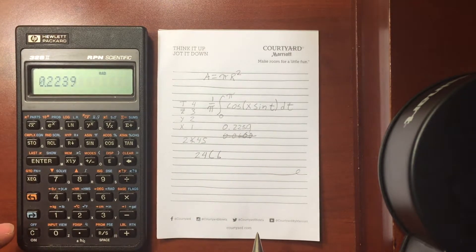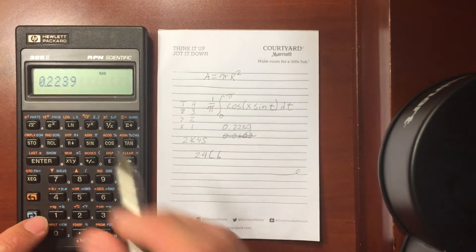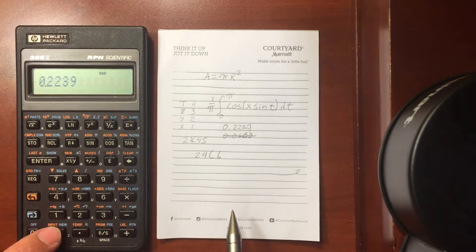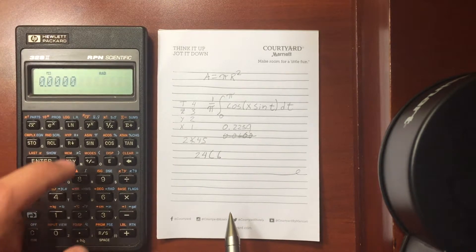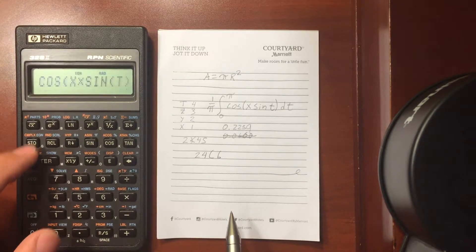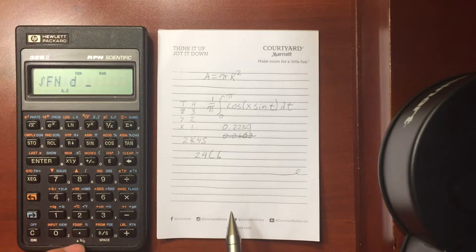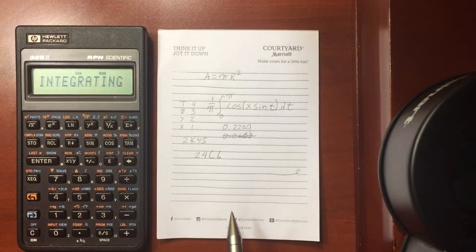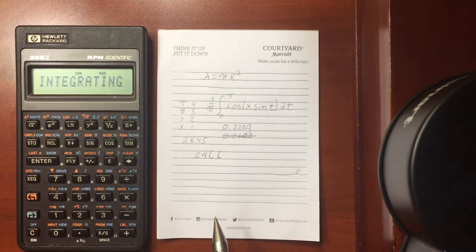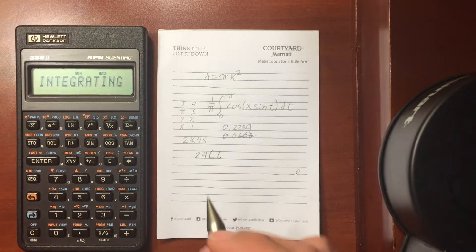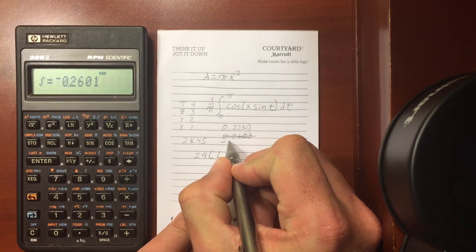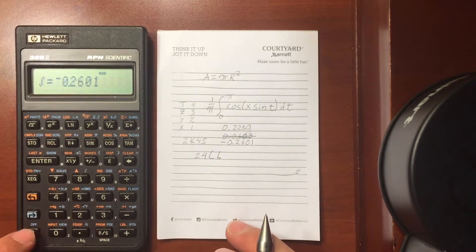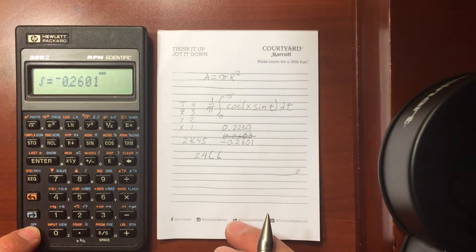Now let's do it for x equals 3. Now I need to set my limits again, because my value in the x register has been replaced by my answer, so 0 to pi. Go to my equation, and then let's integrate it with respect to t. I have an x value of 3 now, hit run stop, and go ahead and solve that integral for x equals 3. So we get a value of negative 0.2601, and that should be correct.